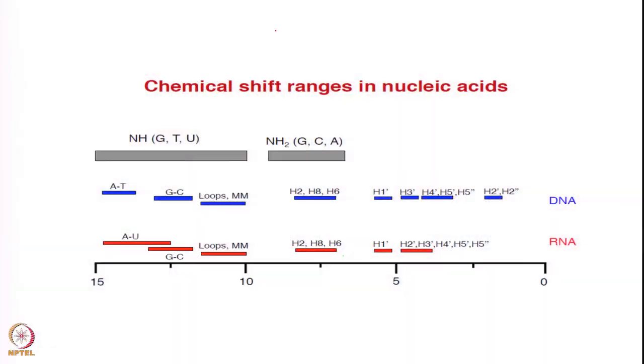So far we discussed the various aspects of DNA structures; now we are going to talk about how NMR can be used in this. Our first observation in NMR concerns chemical shifts — specifically proton chemical shifts — and what protons are possible.